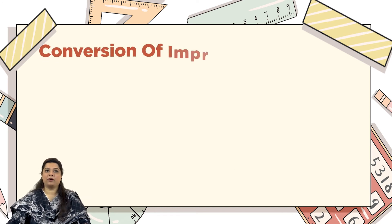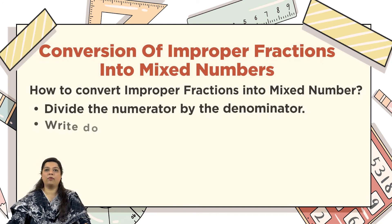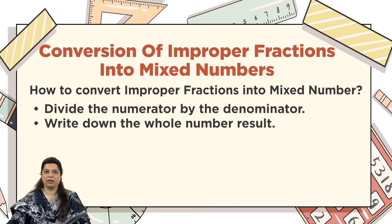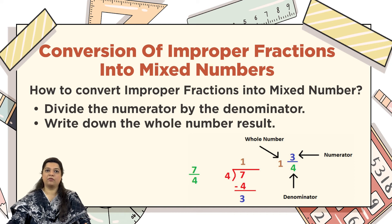Now let's see the second part of this video: how to convert an improper fraction into a mixed number. We have a few steps for that. Looking at the example, the question is 7 upon 4. Step 1: divide the numerator by the denominator — so 7 is our numerator and 4 is our denominator, therefore 7 will be divided by 4.